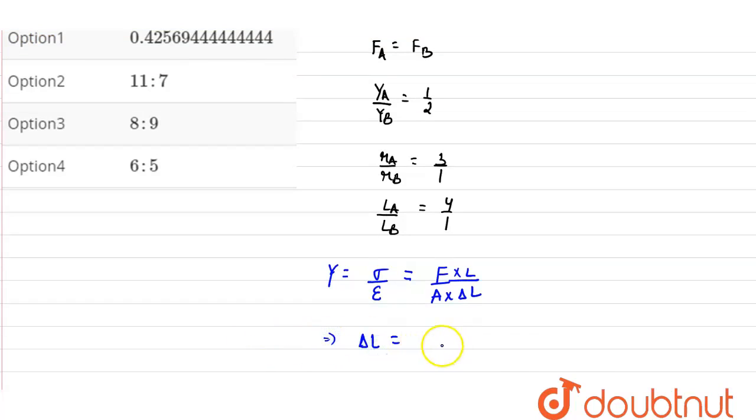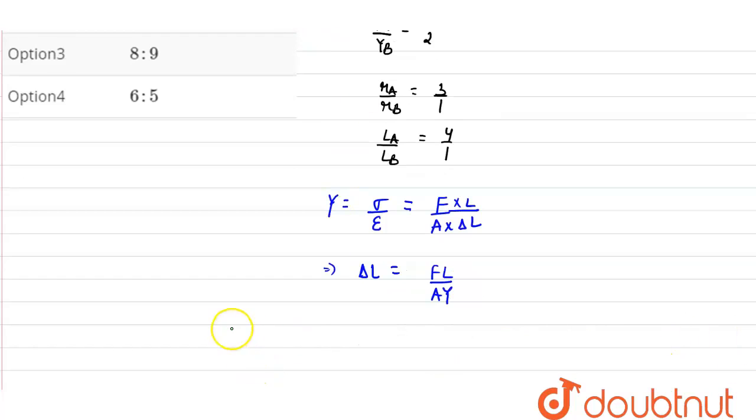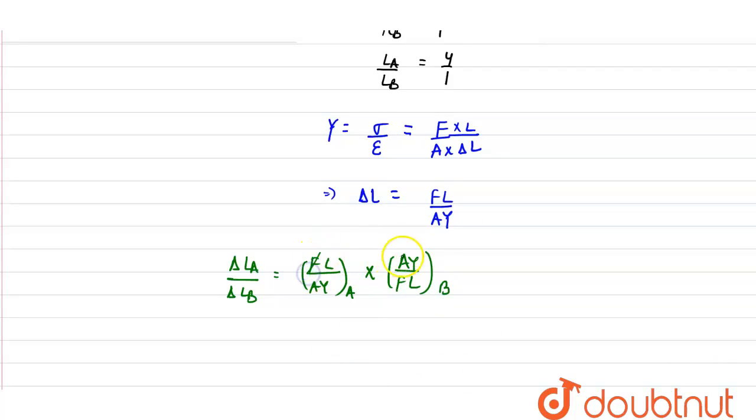So from here we get the relation of elongation as FL upon AY. Using this relation we can write that the ratio of elongation for material A upon elongation for material B will be equals to FL upon AY for material A multiplied by AY upon FL for material B. Now since the force in both materials are same, F will get cancelled out.